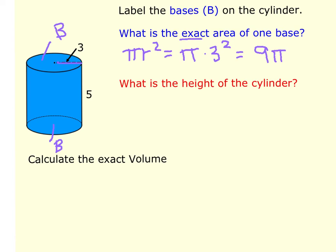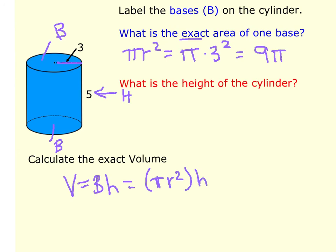The height of this cylinder is 5. To calculate the volume — area of the base times the height of the cylinder — we do pi r squared times the height. The area of the circle is 9 pi and the height is 5, so the volume is 45 pi cubic units. Remember: area uses square units, and volume uses cubic units, so we put a little 3 on the label.